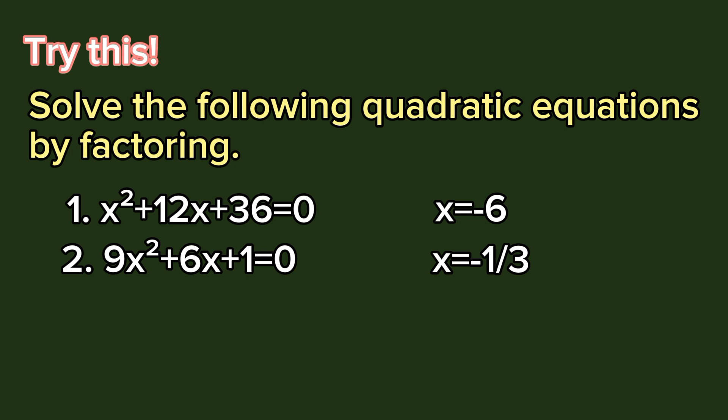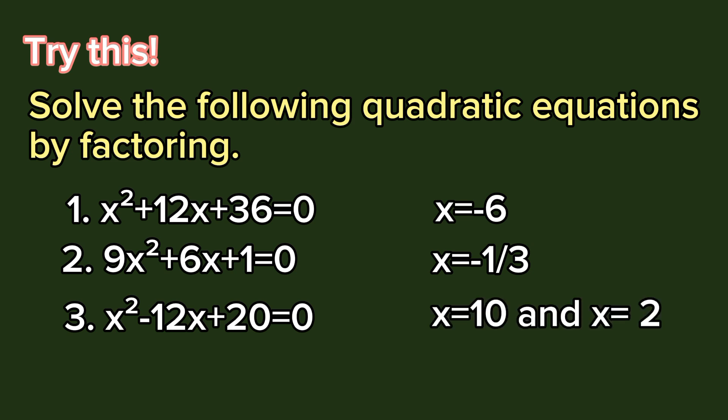Number 3: x² - 12x + 20 = 0. Solutions: x = 10 and x = 2.